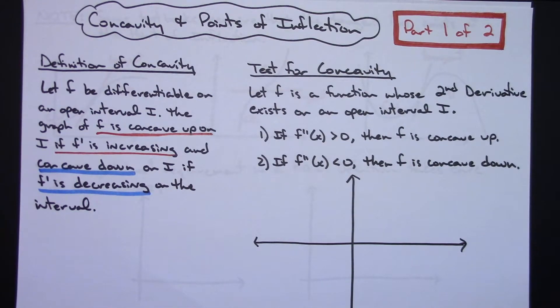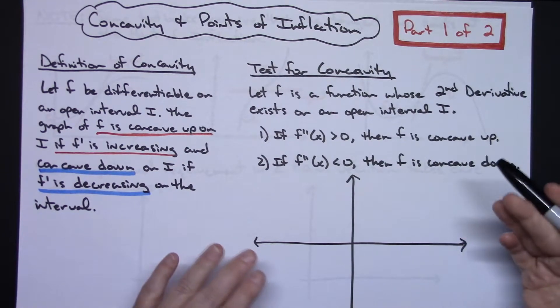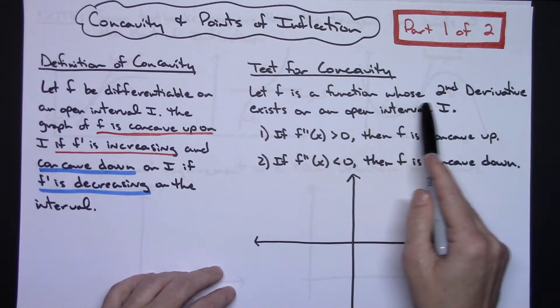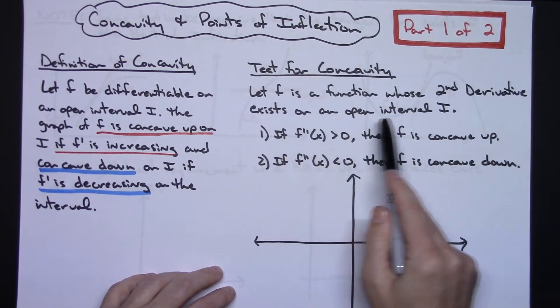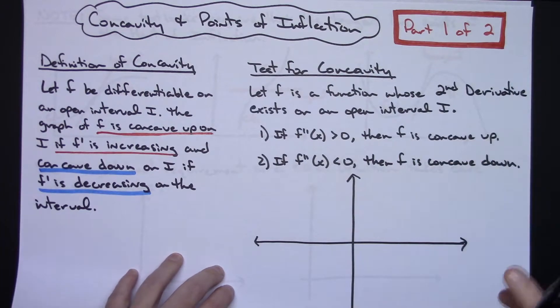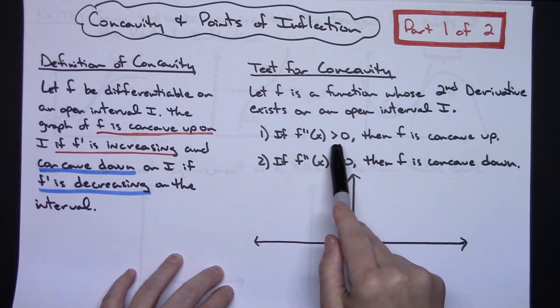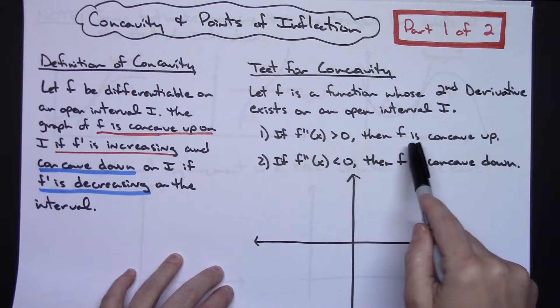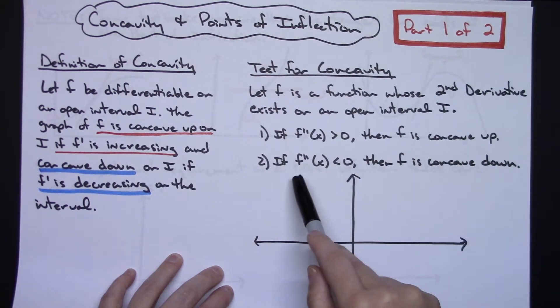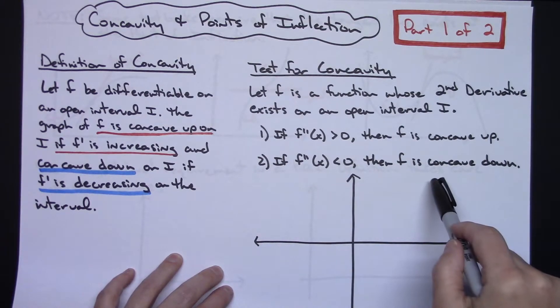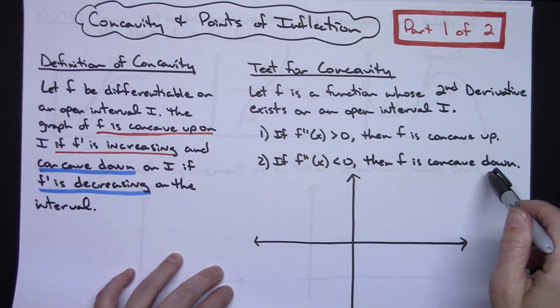Then the second one is actually the test that we're going to use for finding concavity. We're going to let F be a function whose second derivative exists on the open interval. If that second derivative is positive or greater than zero, then we know F is going to be concave up. If the second derivative is negative or less than zero, then we're going to know that F is concave down.